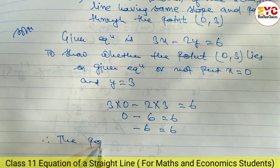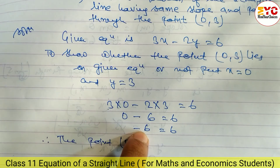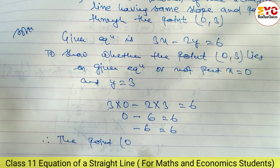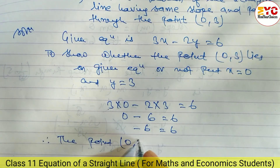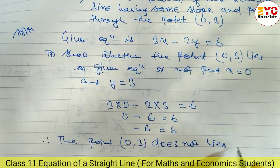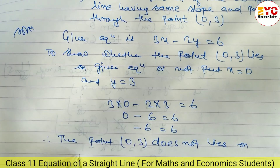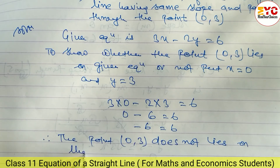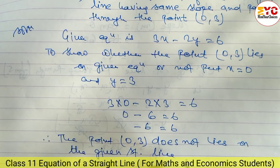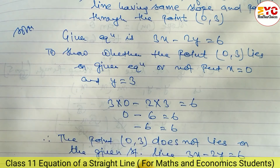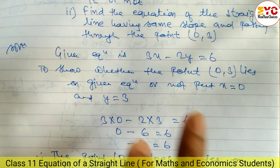Both sides are not equal, so the point (0, 3) does not lie on the given straight line 3x - 2y = 6. If both sides were equal we would say the point lies on the line, but since they are not equal, it does not lie on the line.